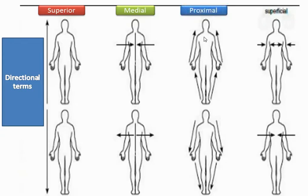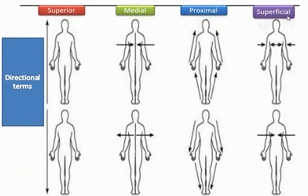We also have proximal, which refers to the part close to the middle of the body or origin of a limb, and its opposite, distal, which is far away. For example, this is the proximal part of the bone and this is the distal part. This is the distal part of the hand and this is the proximal part. Finally, we have superficial, which refers to the surface, and its opposite, deep.